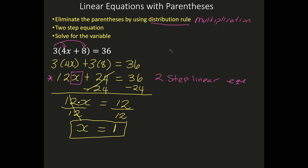This is a fairly easy linear equation with parentheses. Just to recap: I distributed the 3 within the parentheses and got 12x plus 24 equals 36. This is a 2-step linear equation. How do I know? You usually have 3 terms — and if you count them, there are 3. Whenever I have 3 terms, I know I have a 2-step linear equation. I put a box around the x, which tells me the 24 goes first, I do the opposite, and then my last step is to get rid of the 12 using division.